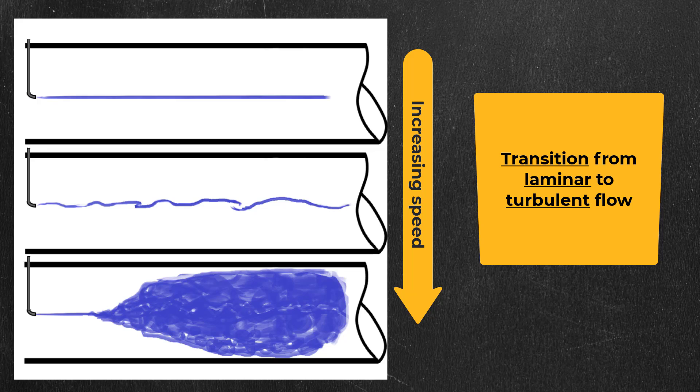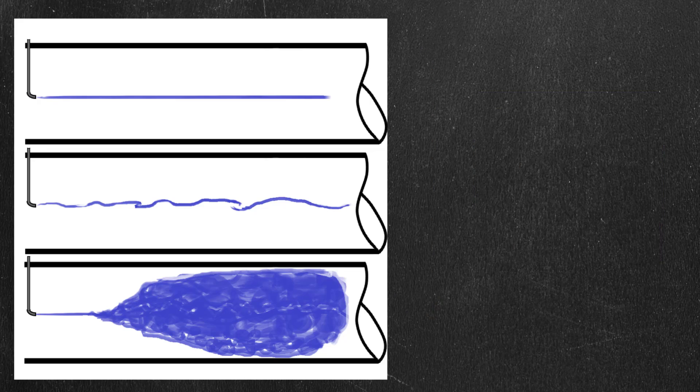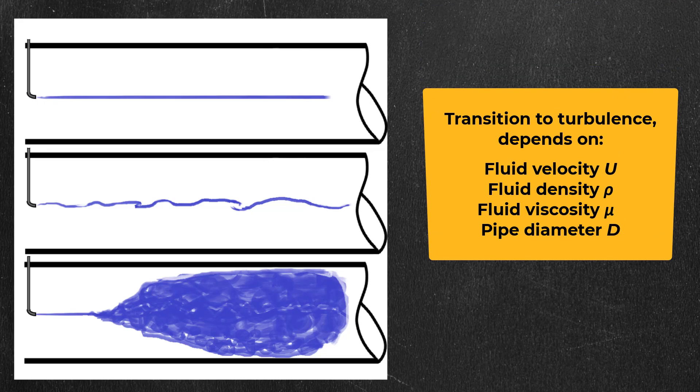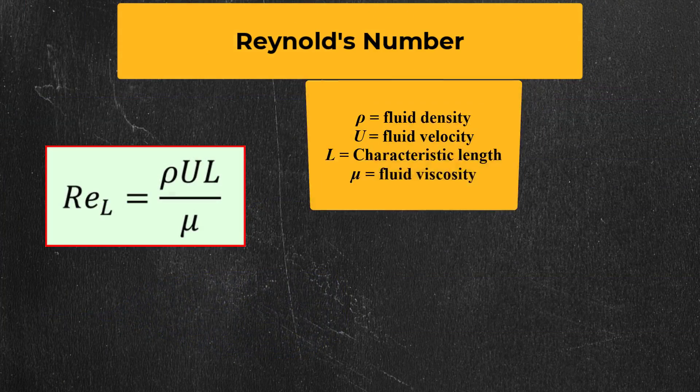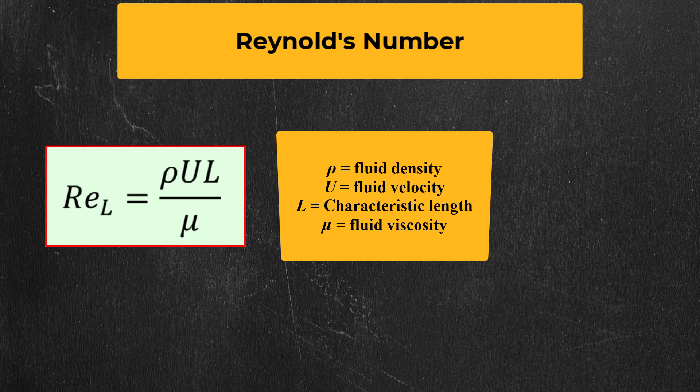Reynolds found that it is not only the velocity that determines when the flow becomes turbulent. It is also dependent on the density and viscosity of the fluid and the diameter of the pipe. He combined these into the dimensionless parameter shown here, which is known as the Reynolds number.